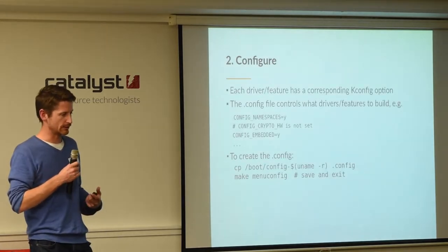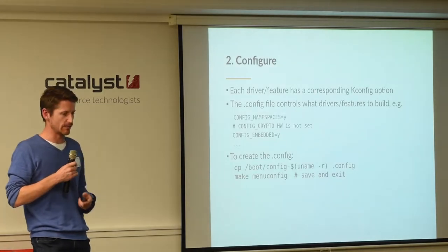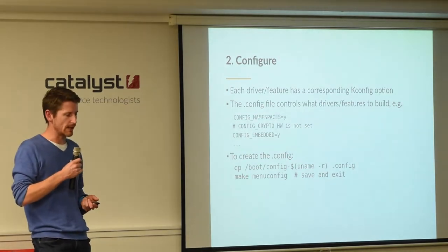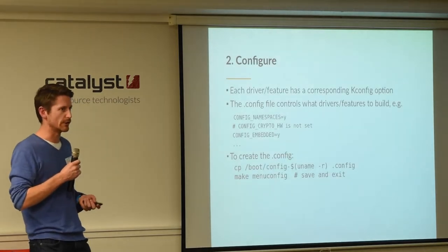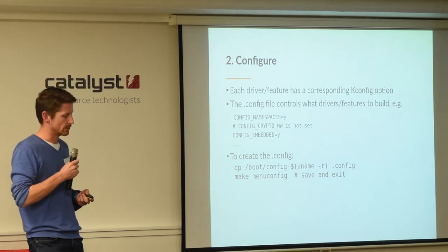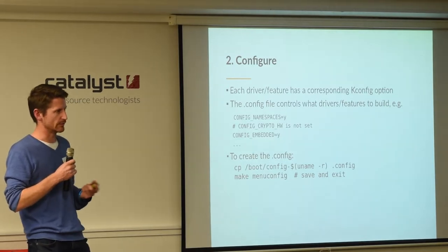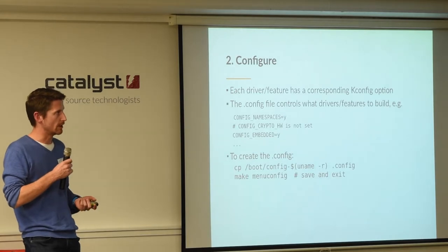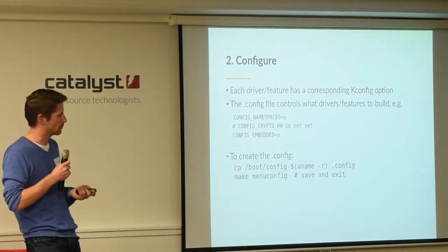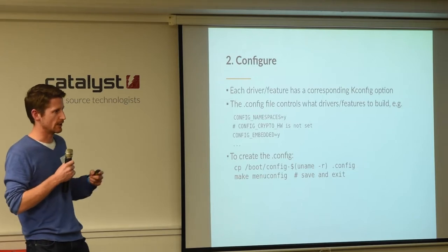Once you've cloned the Linux repo, you've got 25 million lines of C code. On any given laptop or phone, you're not going to be running all that code — just a few million lines of it. The system that allows us to exclude drivers and features we don't care about is called kconfig. kconfig is a series of configuration options which end up as CFDEFs, used by the makefiles to determine what drivers to compile. At compile time, the configuration options used are determined by a plain text file called .config at the top of the source tree, which is not under source control, so you have to generate it yourself.